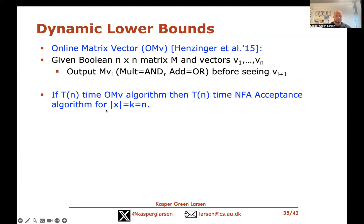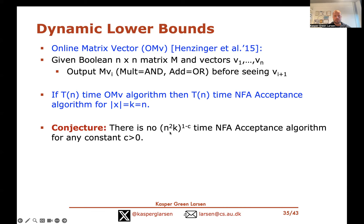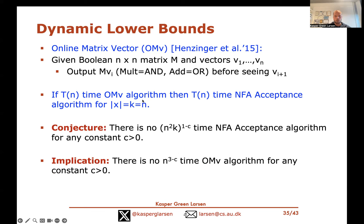This shows that if I have a T(n) time algorithm for OMV then I get a T(n) time NFA acceptance algorithm — by simulating this procedure for strings of length k = n, performing n matrix-vector multiplications. Therefore, if our NFA Acceptance Hypothesis says you cannot beat O(n² · k) for NFA acceptance, inserting k = n implies you cannot have an OMV algorithm running in O(n^{3−c}) time — so the OMV conjecture follows from our static NFA problem.